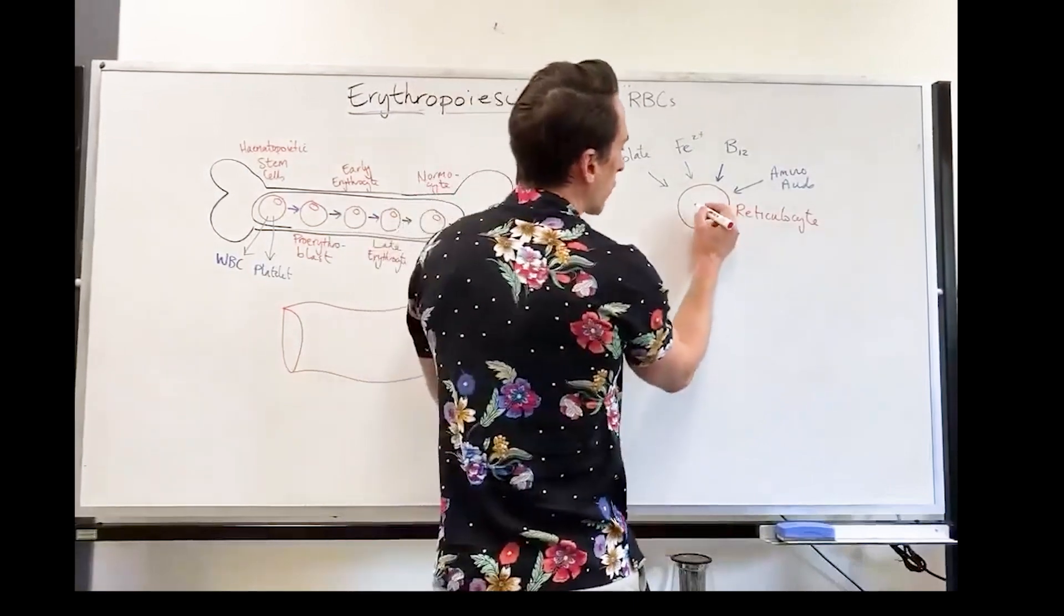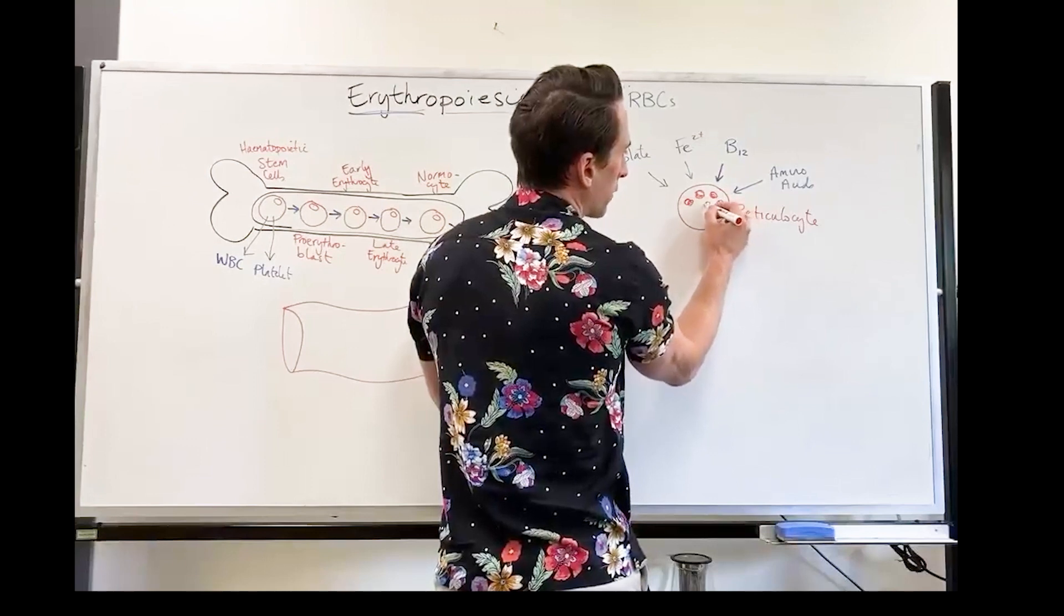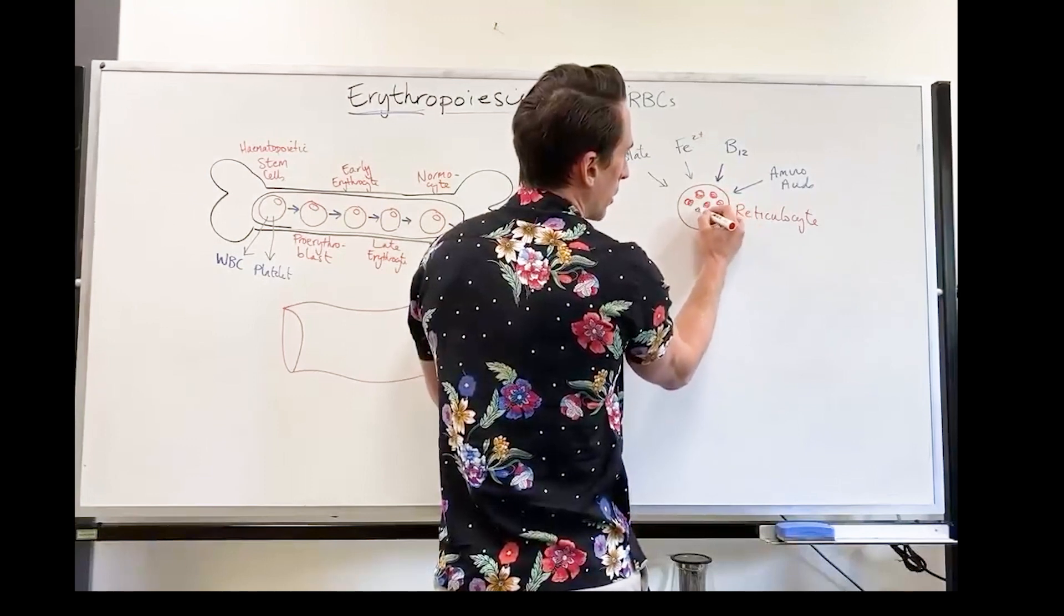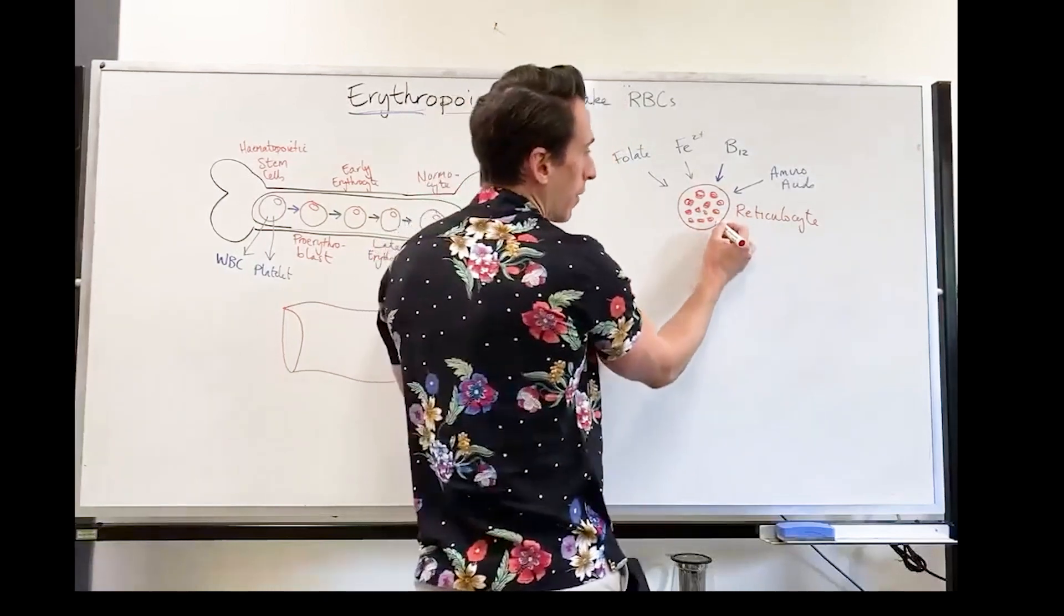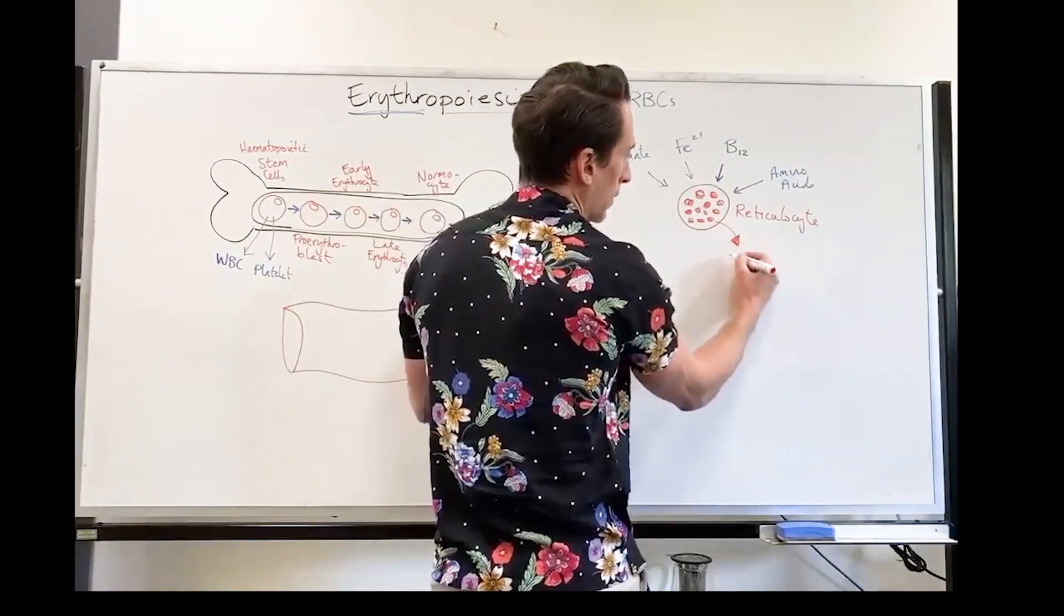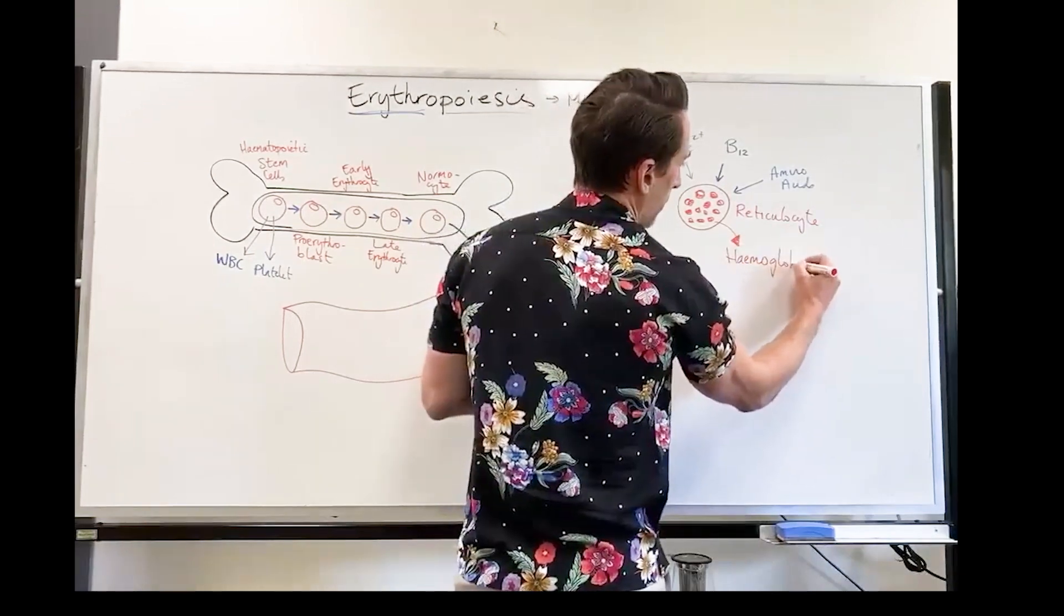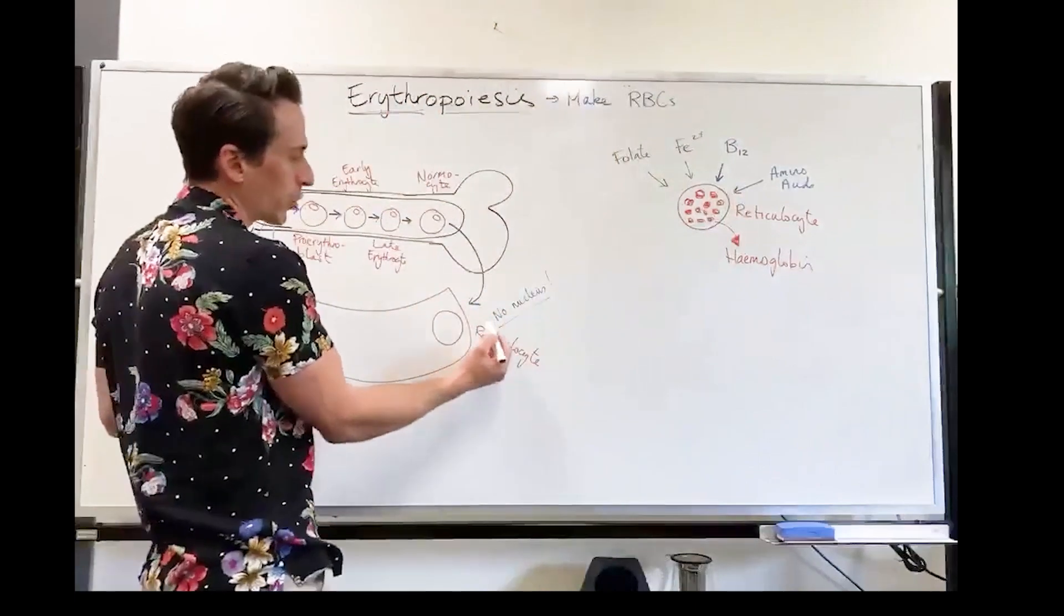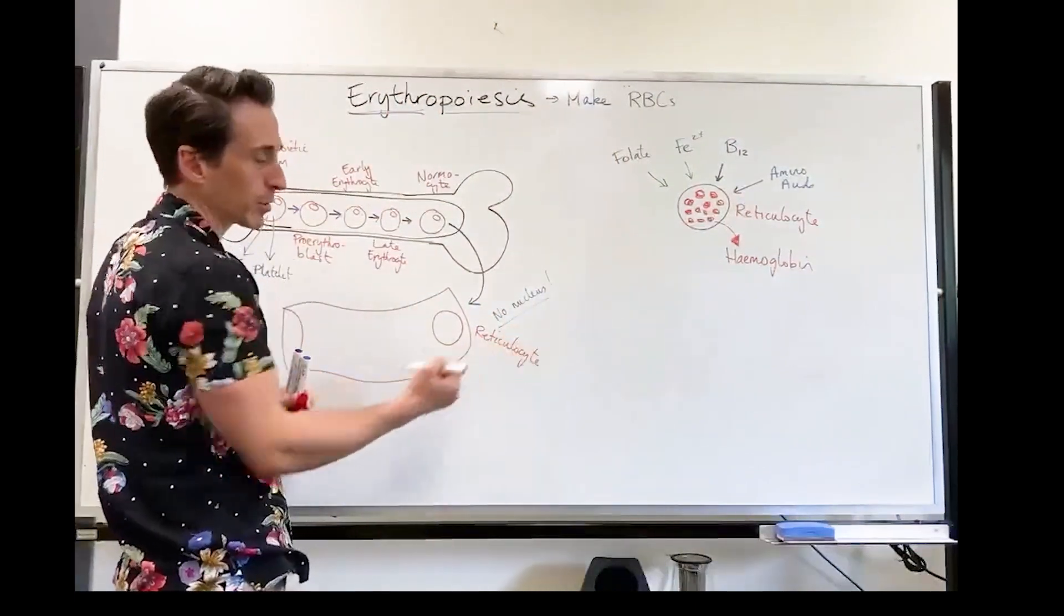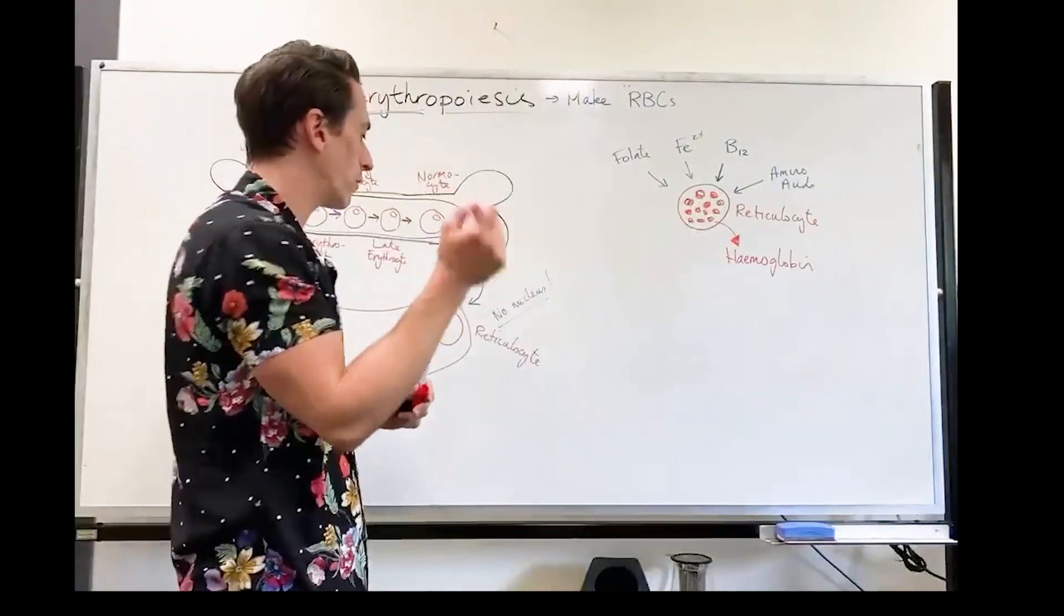So you've got all these millions of hemoglobin molecules inside. So there's no nucleus. That's important. That nucleus has disappeared by the time it's a reticulocyte. We needed it to make the hemoglobin, but now once we've made it, it's gone.